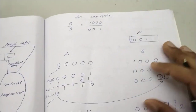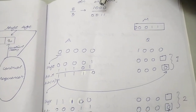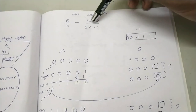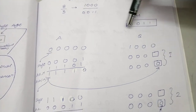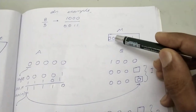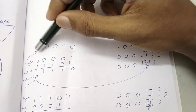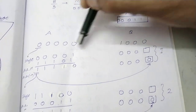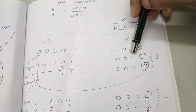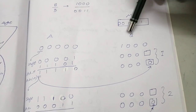Let us see how it works with an example. We want to divide 8 by 3, that is 1000 by 0011. The divisor is 0011; we append a 0 to it as shown. As always, the A register will have only 0s, and Q will have 1000. So the M register holds 00011 and the Q register holds 1000.